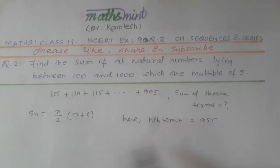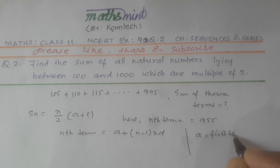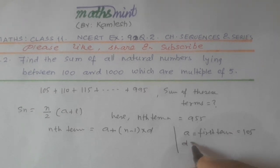The formula for nth term is: nth term equals A plus (n minus 1) times D, where A is the first term, here it is 105. D is the common difference, equal to A2 minus A1. Here A2 is 110 minus 105, which equals 5.